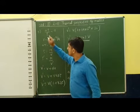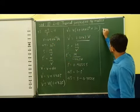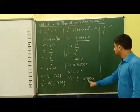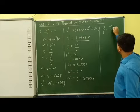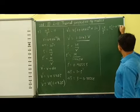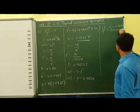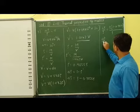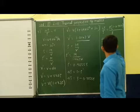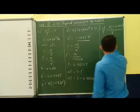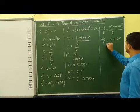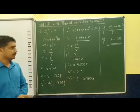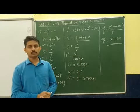We want to calculate delta rho by rho. Delta rho equals rho minus rho dash, that means rho minus 0.9855 rho, which gives 1 minus 0.9855 into rho. So delta rho by rho equals 0.0145, and the final answer is approximately 0.0144.